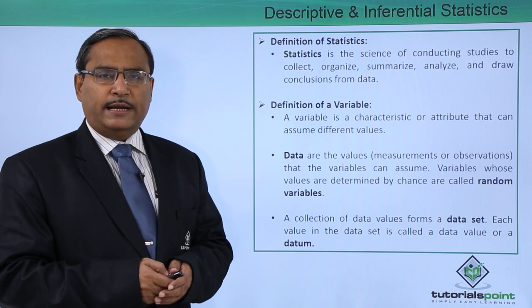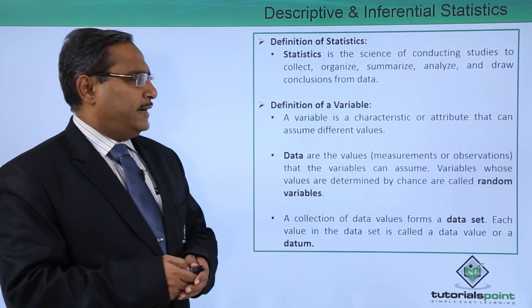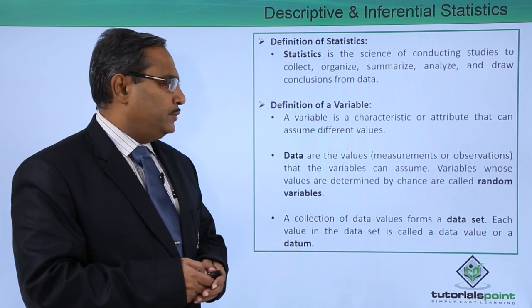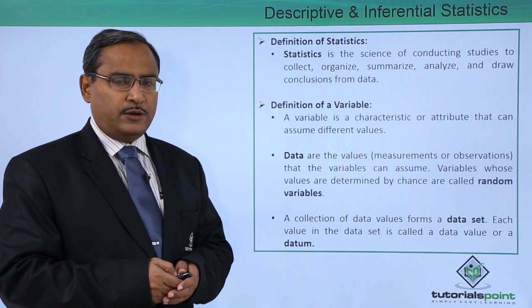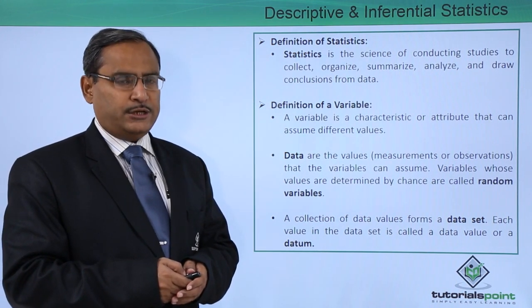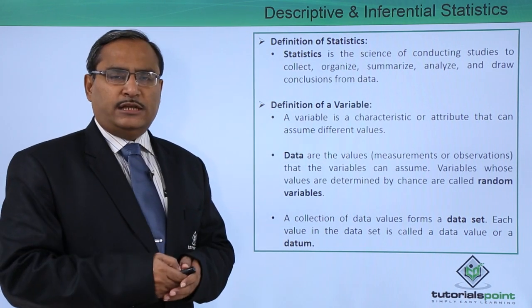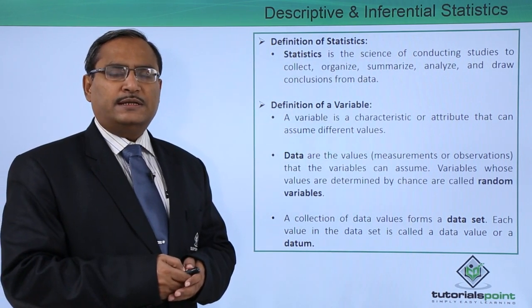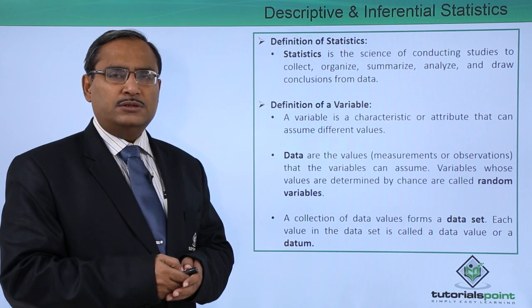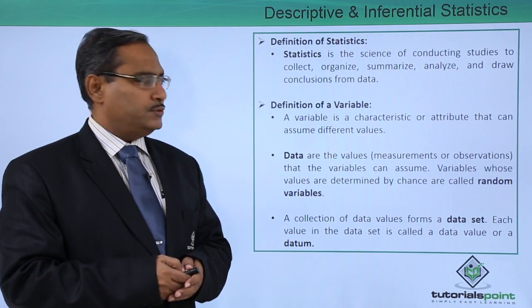Definition of a variable: A variable is a characteristic or attribute that can assume different values. We know that a variable can assume different values. You can consider the age of a person—age is a variable because it can assume different values.